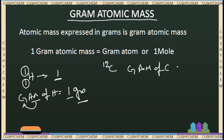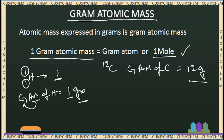Atomic mass of carbon is represented as 12 grams. Atomic mass of carbon is equal to 1 gram atomic mass. One gram atomic mass will be considered as 1 mole — so 1 mole of carbon is equal to 1 gram atomic mass.